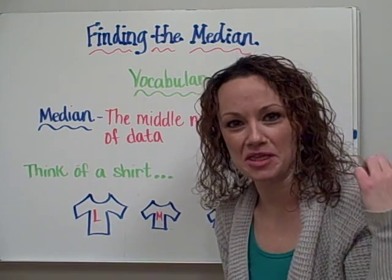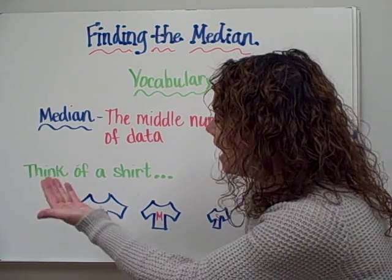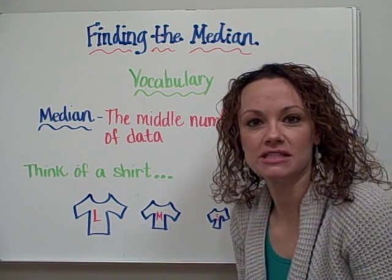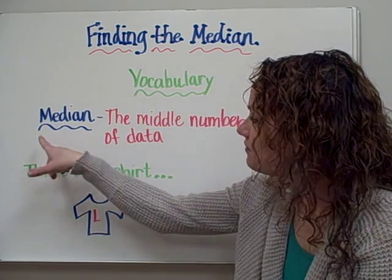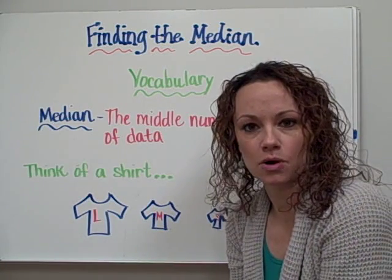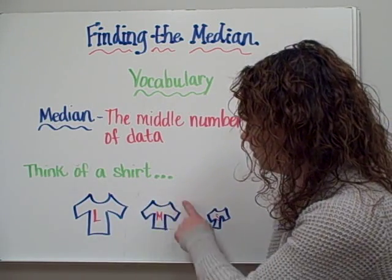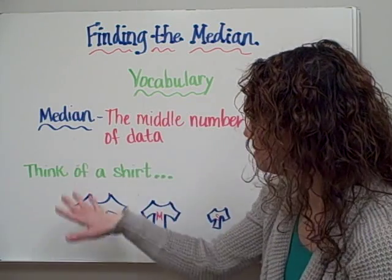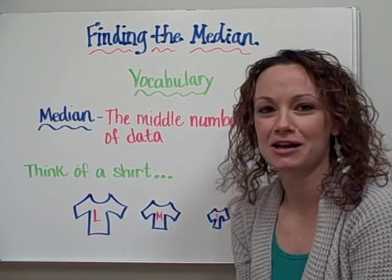We know that shirts have little tags on the back and they come in sizes — often small, medium, and large. Which shirt often falls in the middle category? That would be the medium shirt. And if you take a look at the first three letters of the word median, it kind of looks a little bit like the word medium. That's how I tell my students to remember that median means the middle number, just like medium is the middle size in a set of shirts. Please copy this definition and the example into box number two of your homework sheet.